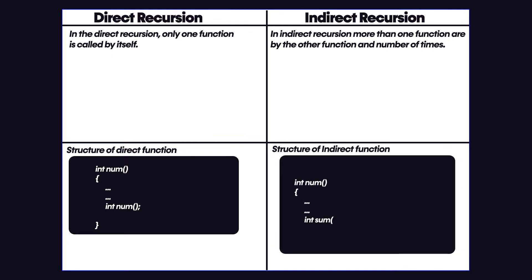Now if we compare it to the structure of indirect function or indirect recursion, we have a function named as int num and this function is calling the function sum, and that function sum is calling the num function again. So that is how we are getting some kind of indirect recursion of two functions.